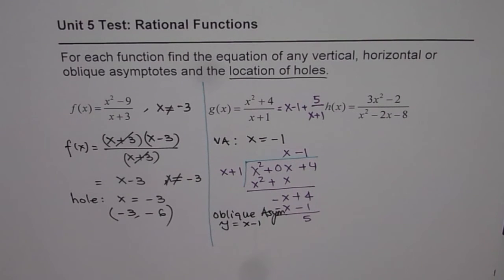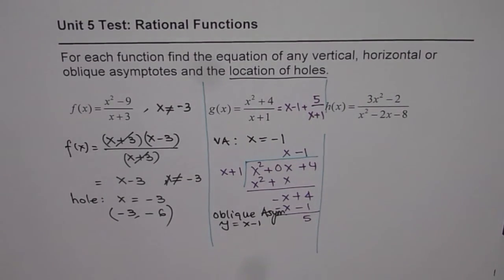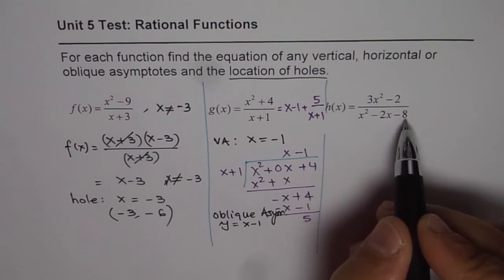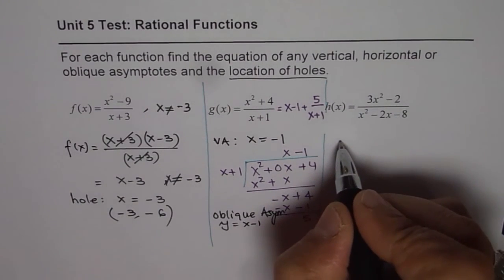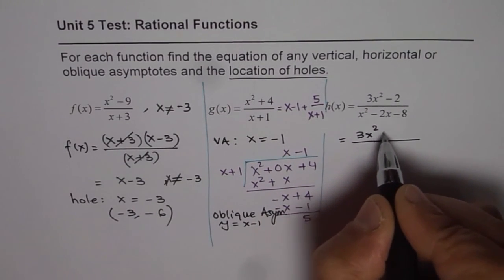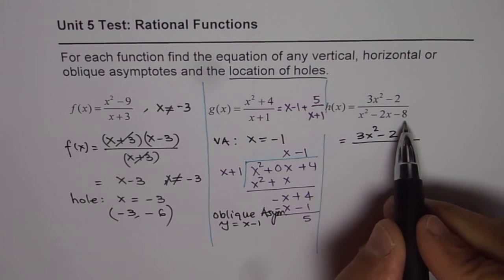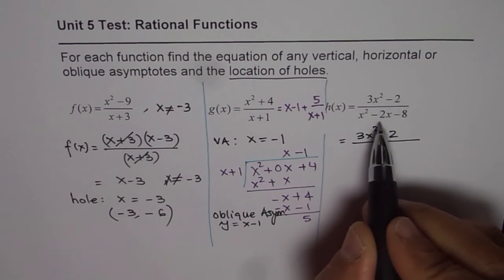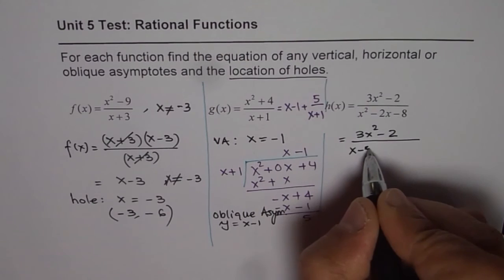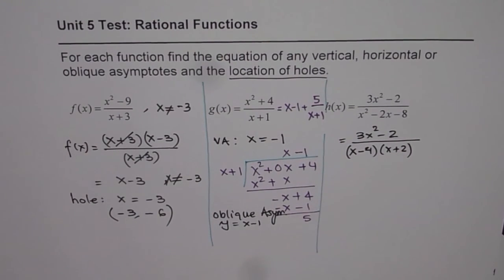Now let us look into the last one here, which is h of x equals to 3x square minus 2 divided by x square minus 2x minus 8. So we can factor the denominator. So in the numerator, we have 3x square minus 2. In the denominator, we are looking for two numbers whose product is minus 8, and sum is minus 2. So 4 and 2 can work for us, x minus 4 times x plus 2. So these are the numbers.